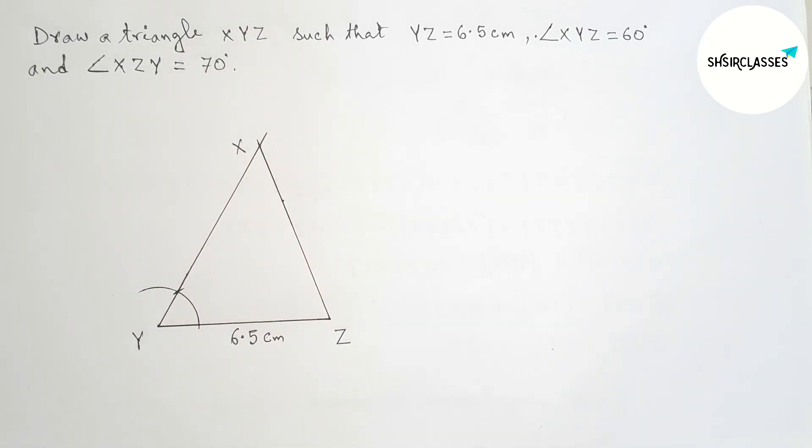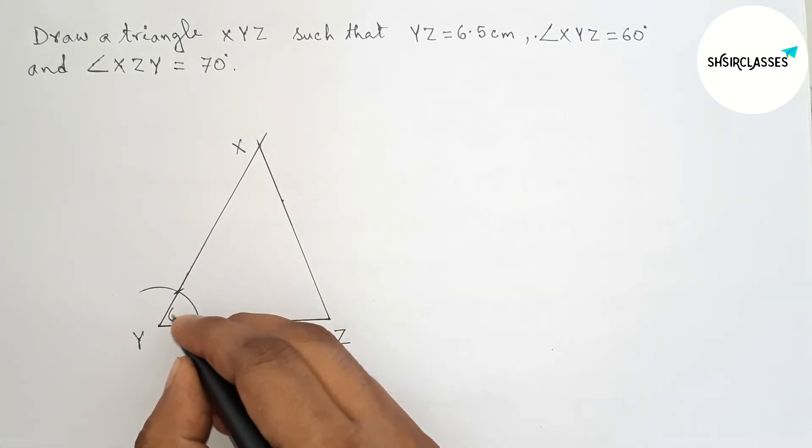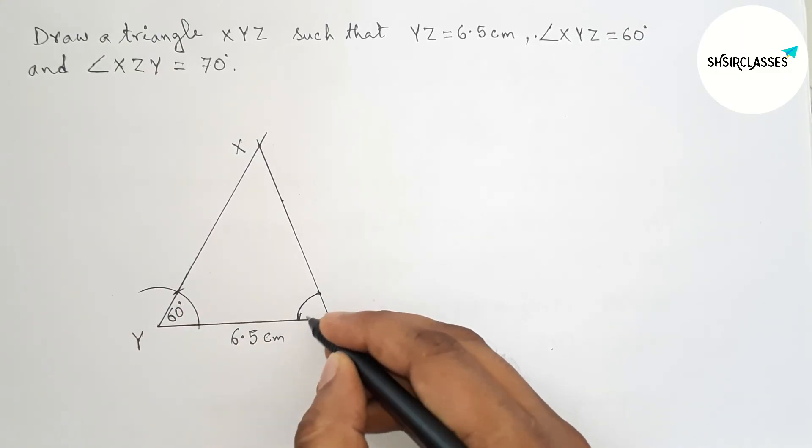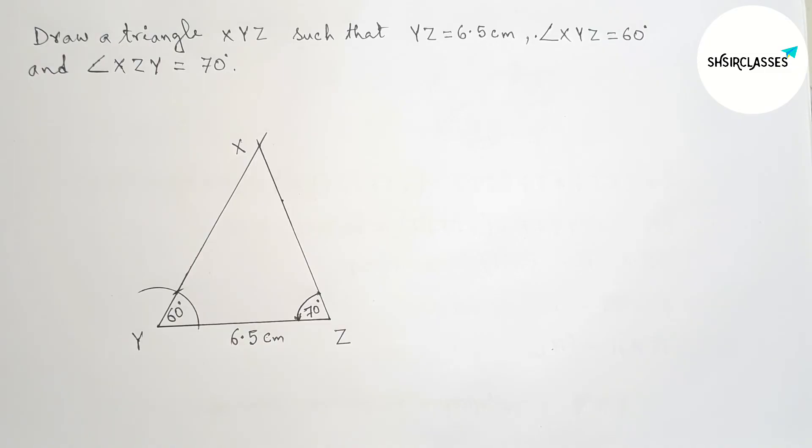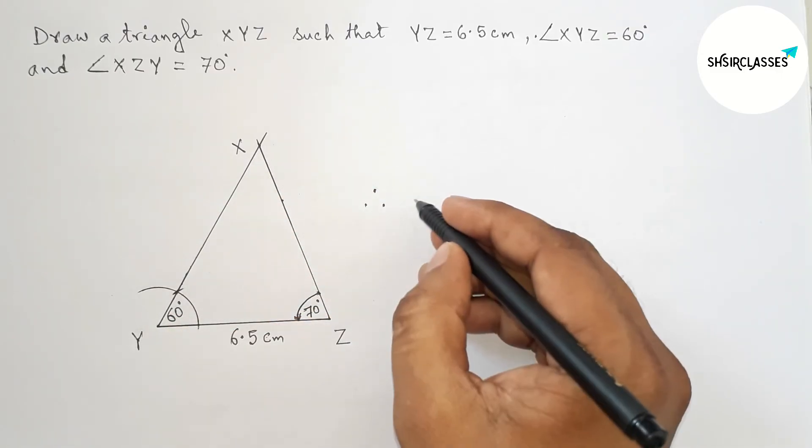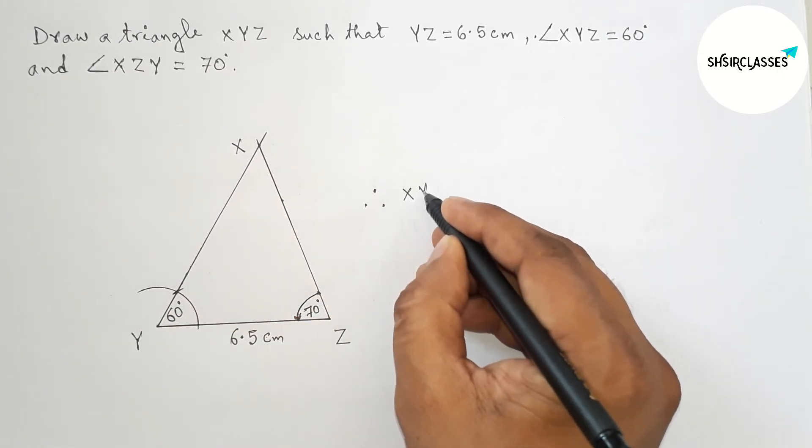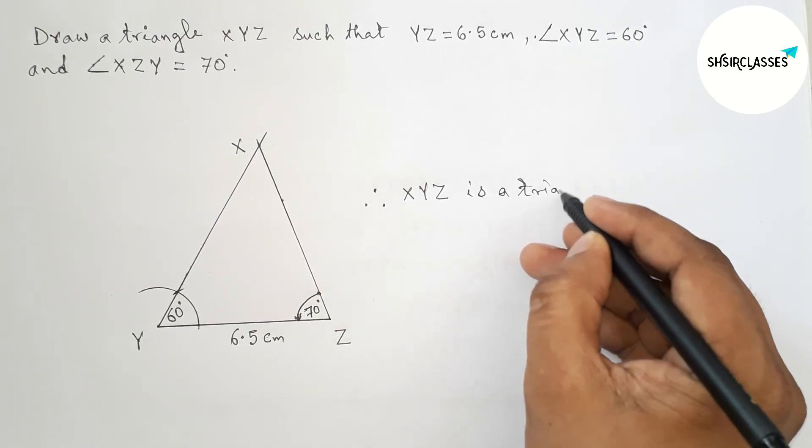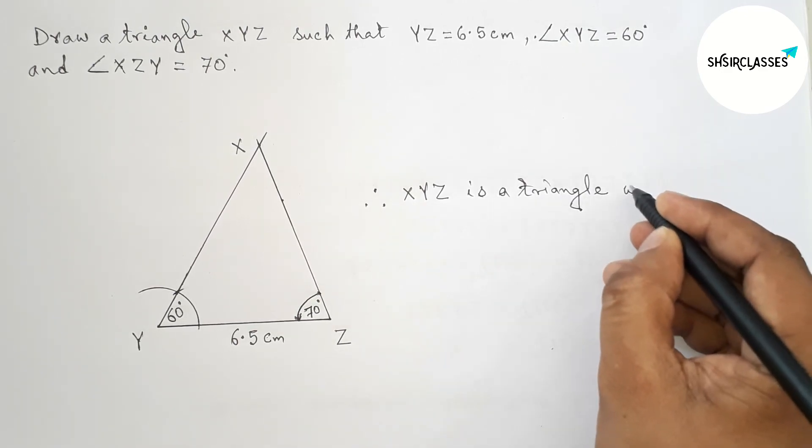Okay, so here this is 60 degree angle and this is obviously this one 70 degree angle. So finally we got our required triangle XYZ.